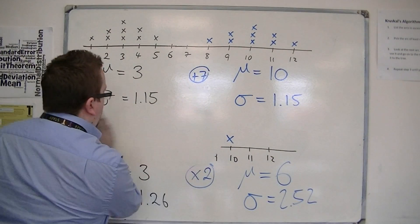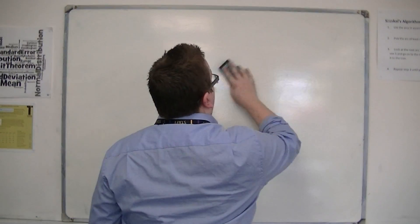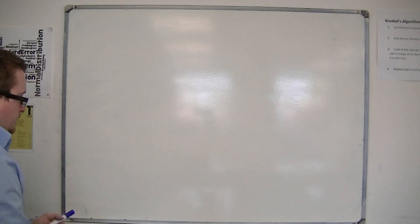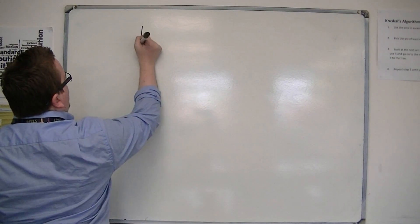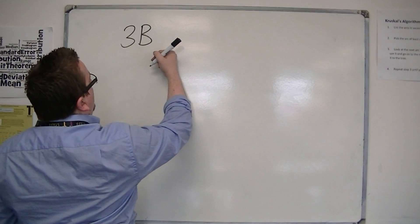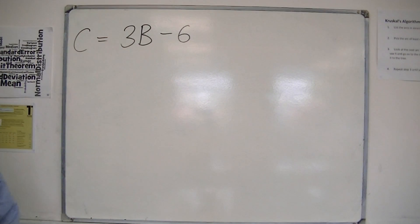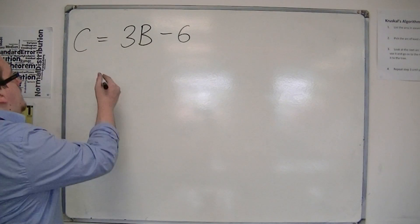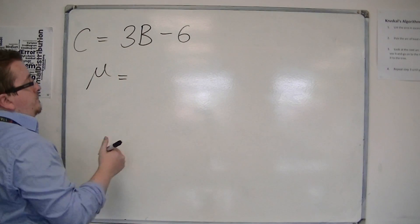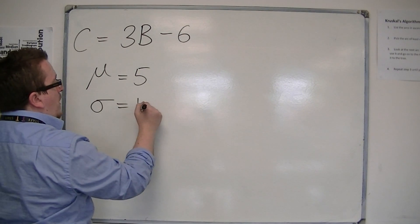So let's look at an algebraic approach for this. Let's say I had some original data, which I'm going to represent by b. I multiply each of those b's by three and take away six. And this is going to be my new values, my new set of values. So if I put the mean as, let's say, five, and the standard deviation as 1.5.